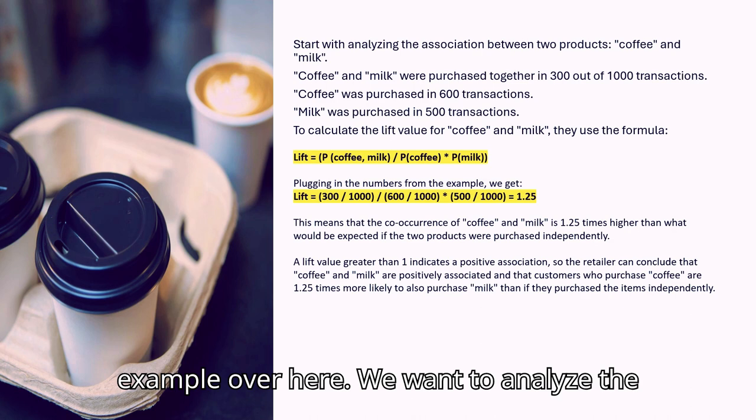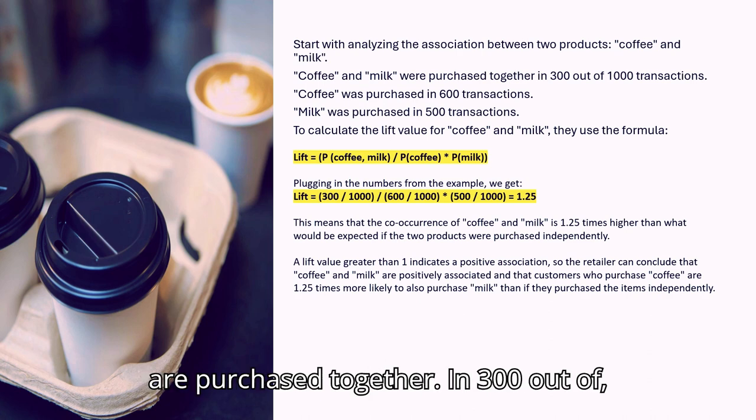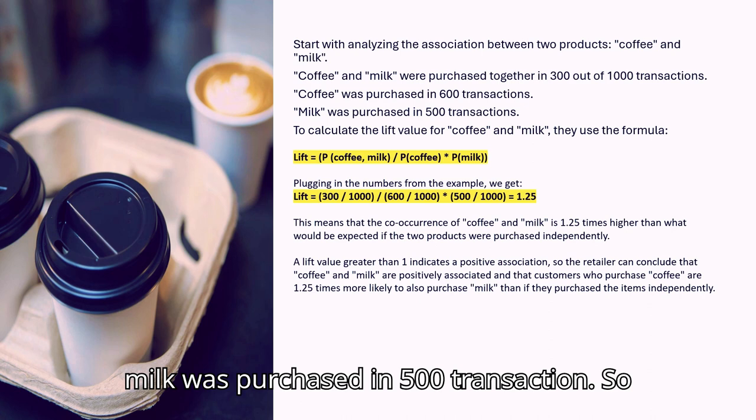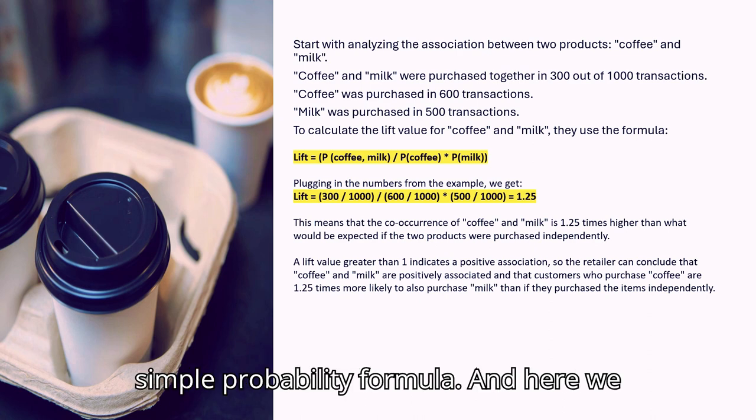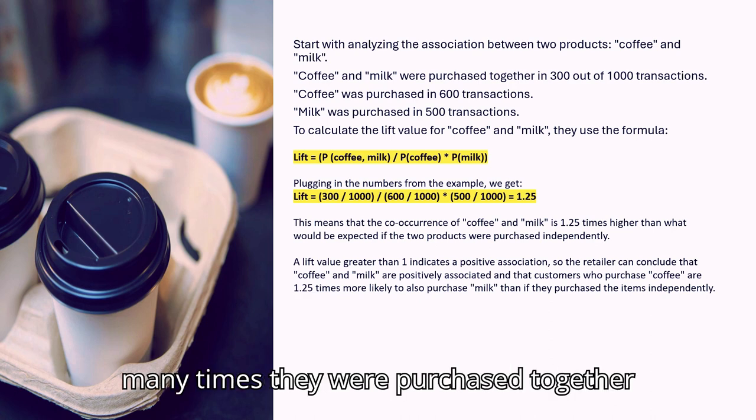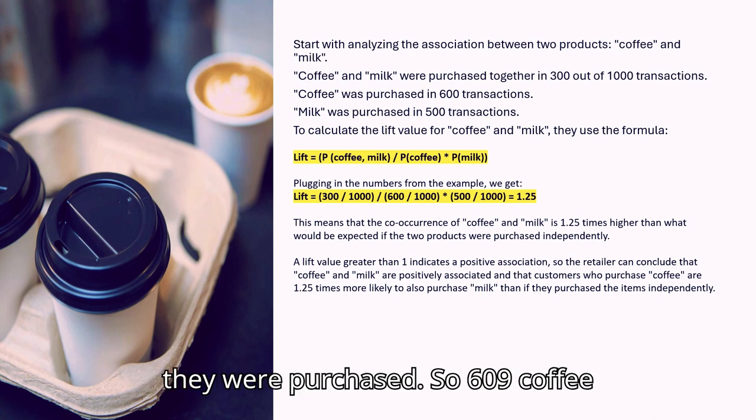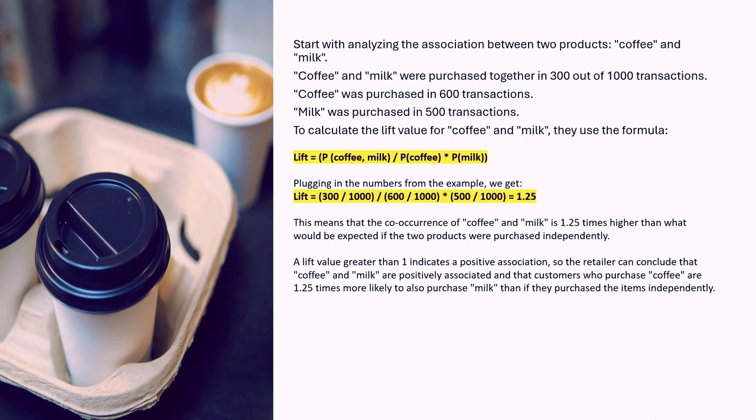We want to analyze the association between two products, which is coffee and milk. In the transactions, coffee and milk were purchased together in 300 out of 1000 transactions. Coffee was purchased in 600 transactions, milk was purchased in 500 transactions. So if we calculate the lift value using the formula you can see here, which is a simple probability formula, we are putting all these values which we have calculated: purchased together, coffee and milk, 300 times; individually, 600 times coffee was purchased, and 500 times milk was purchased. Automatically you can see the lift was calculated and it comes out to be 1.25, which is higher than what we would have expected if the two products were purchased independently.